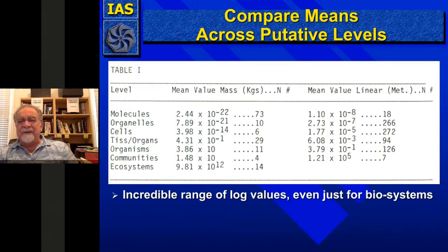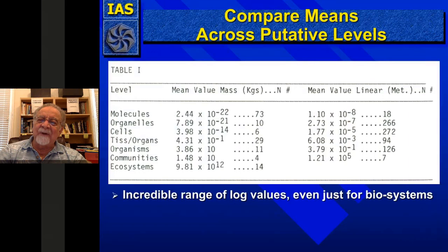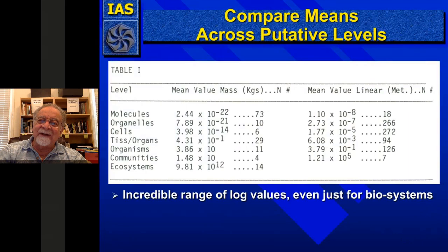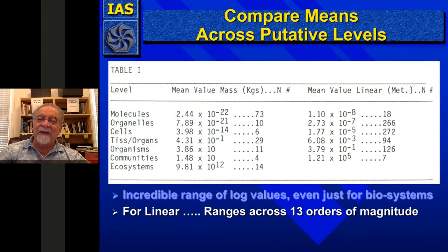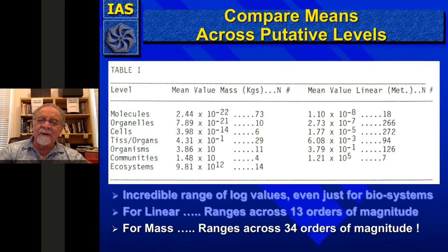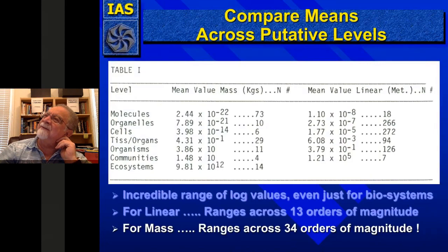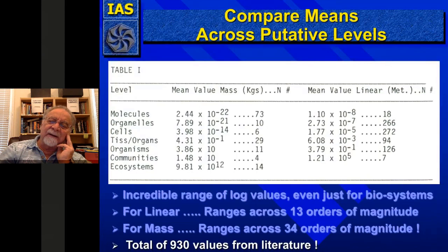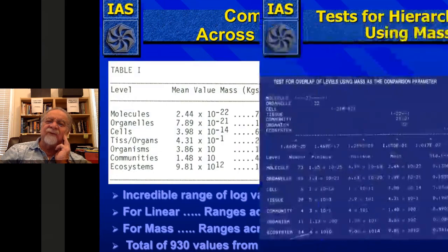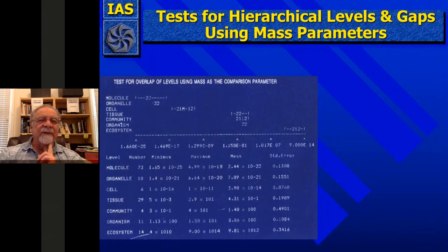One of the first problems I found was that I couldn't graph them properly because no graphing machine would go across all these log levels — like 10 to the minus 22 to 10 to the fifth. That's 27 different log values just for biosystems. The ranges were across 13 orders of magnitude for linear dimensions, and for mass about 34 orders of magnitude. Even this little sample had 930 — almost 1,000 — true values from the biological literature. This is a test for overlap of levels, covering molecules, organelles, cells, tissues, communities, and ecosystems.